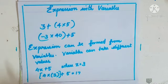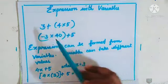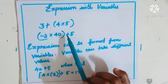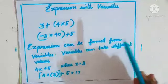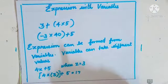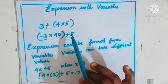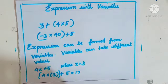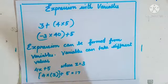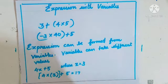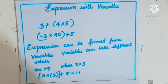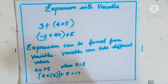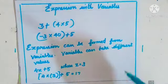Today we are going to see about expressions with variables. Like 3 plus 4 into 5, or minus 3 into 40 plus 5 — these are called expressions. You can calculate and find the answers. But there is no x, y, or any alphabet involved. Using a math stick, we arrived at 2 into n, where n takes values 1, 2, 3, 4.